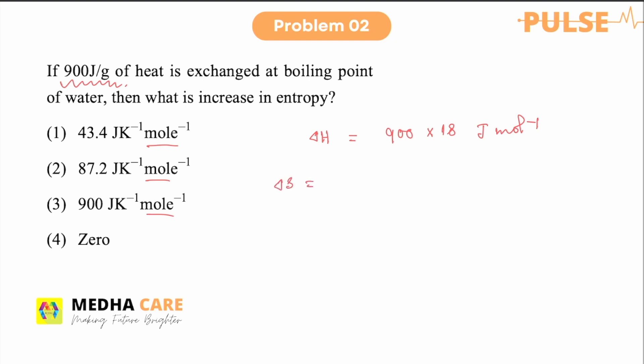So in this case the total delta H value will be this one. Now we have to calculate delta S. So delta S will be delta H divided by the boiling point. So in this case delta H we have 900 into 18 and boiling point of water that is 373 Kelvin. So that will be the answer.